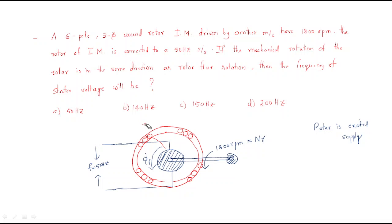The condition for EMF generation is whenever there is a relative speed between the conductors and the flux. Here the conductors are stationary and the flux is rotating, so the EMF will be generated. The important question is how it generates — you should first look at what is the speed of the rotor flux.